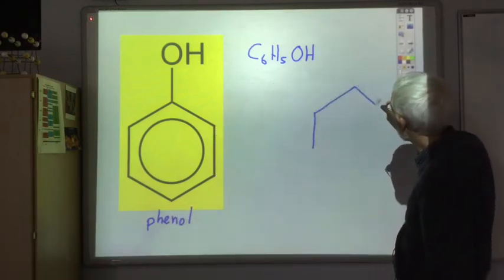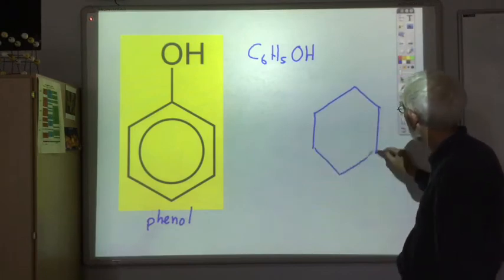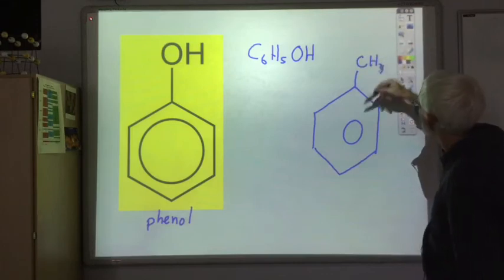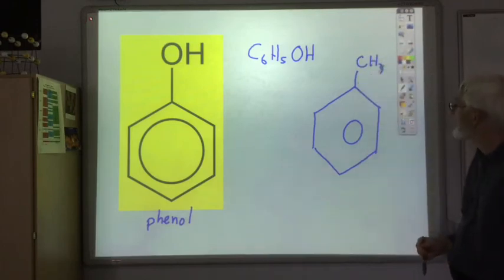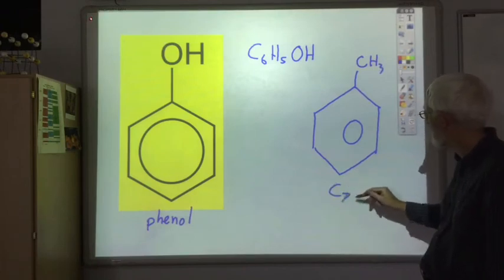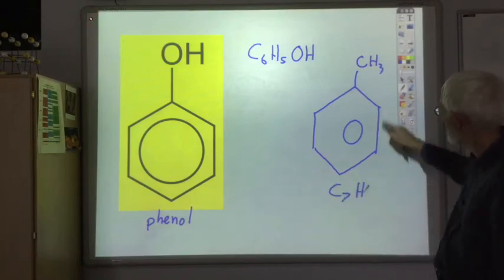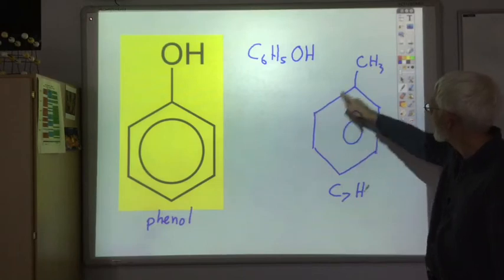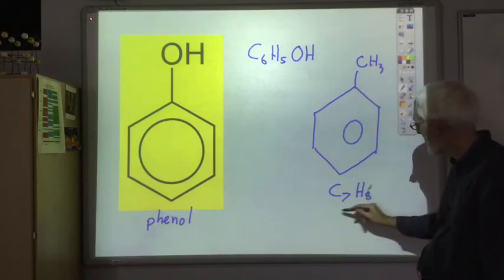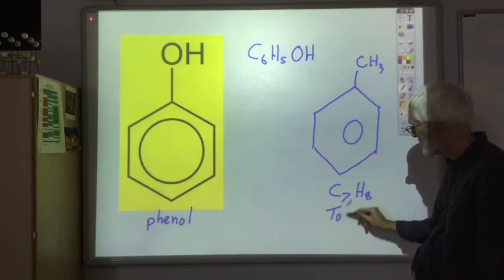Another very common substitution is to remove H and stick on a CH3. So that would have the chemical formula C7 H8. And this is known as toluene.